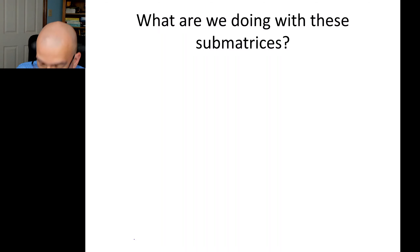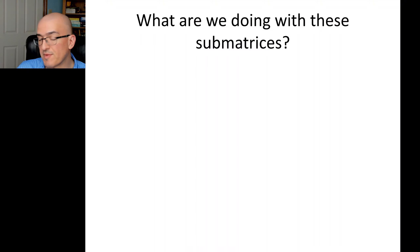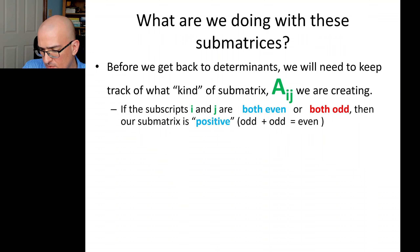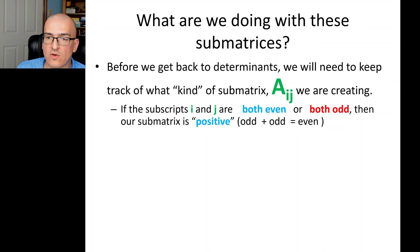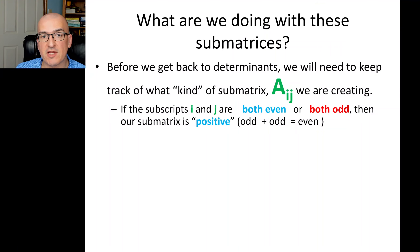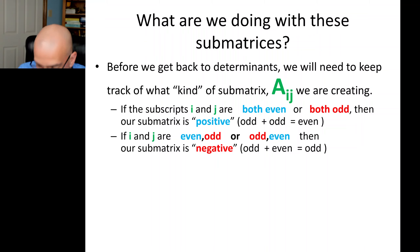What do we do with these submatrices? We're going to string a bunch of them together, multiplied by constants, and take their determinants in order to calculate the determinant of larger matrices. Part of that calculation will involve keeping track of whether i and j are both even, both odd, or a mix of even and odd. A submatrix is called a positive submatrix if i and j are both even or both odd.